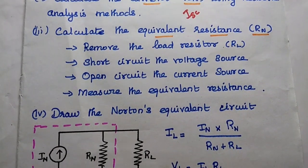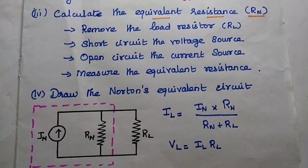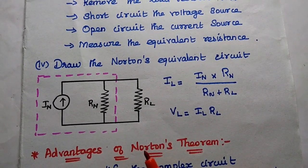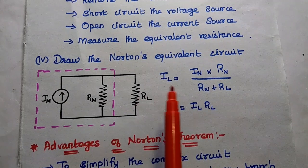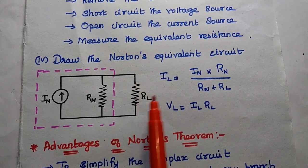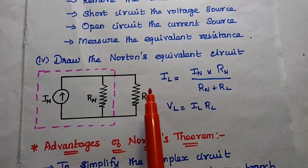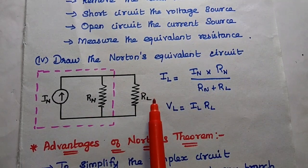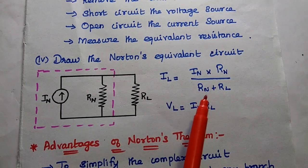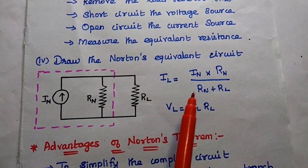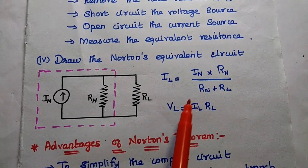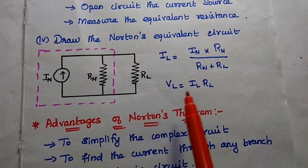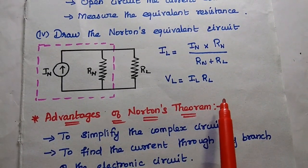Finally, we draw Natan's equivalent circuit with the calculated short circuited current and equivalent resistance. We can then calculate the current flowing through the load resistor as IL using the current division rule: IL equals the total current multiplied by the opposite resistance RN, divided by RN plus RL. From this we can also find the voltage drop across the load resistor using Ohm's law: IL multiplied by RL.